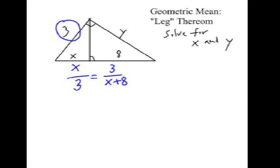Now we're going to have to cross-multiply and get X squared plus 8X equals 9. Subtract 9 from each side, which gives us our quadratic equation. X squared plus 8X minus 9 equals 0.